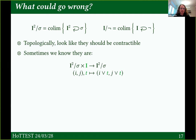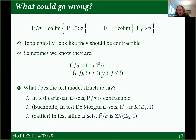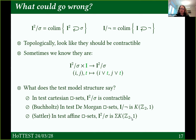This triangle quotient is invariant under permutations. If we look at the test model structures, we sometimes get funny answers. In the test model structure on cartesian cubical sets, I² mod sigma is contractible. But in affine cubical sets, this thing is actually a suspension of K(ℤ/2, 1) — some fancy topological space. And in De Morgan cubical sets, this quotient of the interval by negation is the non-suspended version — that is, infinite-dimensional projective space.